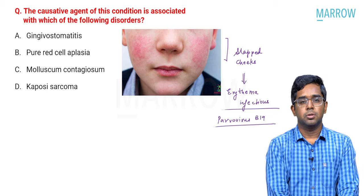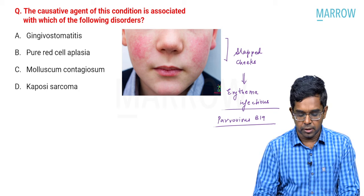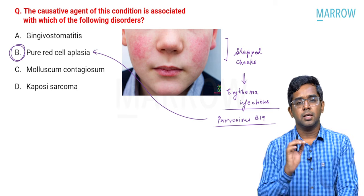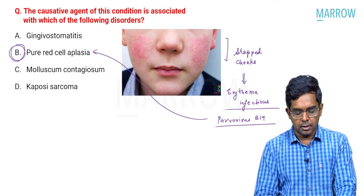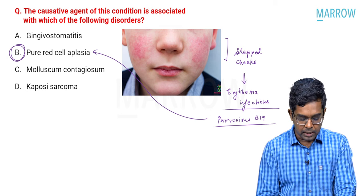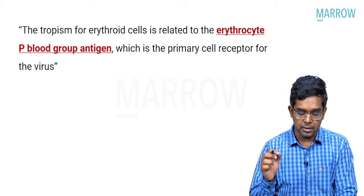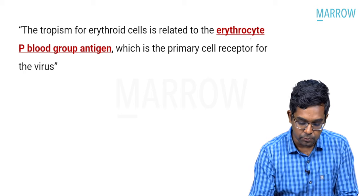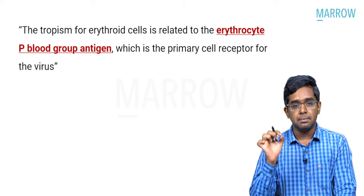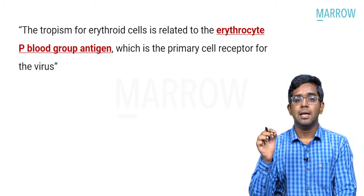Now correlate which disorder parvovirus B19 is associated with — it is associated with pure red cell aplasia. Among the options, the answer is option B. The reason parvovirus B19 is associated with pure red cell aplasia is because it has a tropism for erythroid cells through the erythrocyte P blood group antigen. That is why erythroid cells become the primary target, causing red cell aplasia.